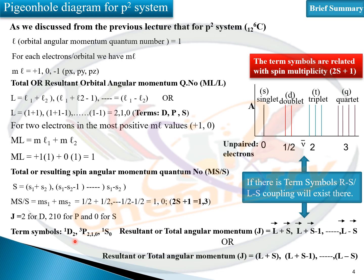By calculating the J values through this formula, we can get a total of five J values and five term symbols — 1 singlet and 3 triplet terms — the same as derived by utilizing the pigeon hole diagram. We are simply deriving term symbols using different techniques and methods.